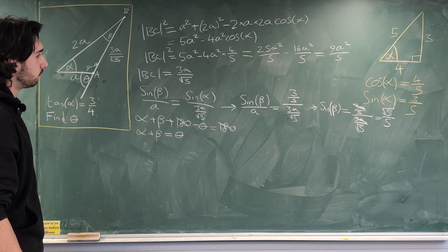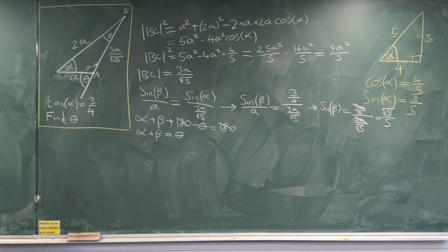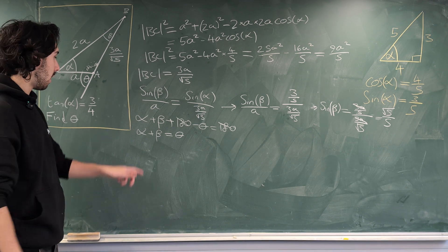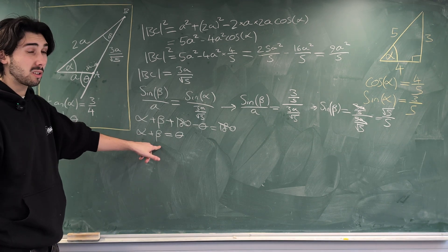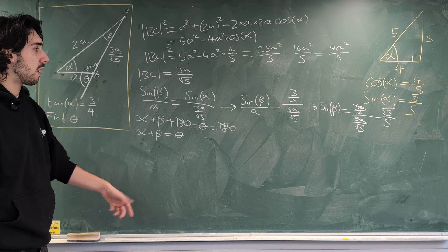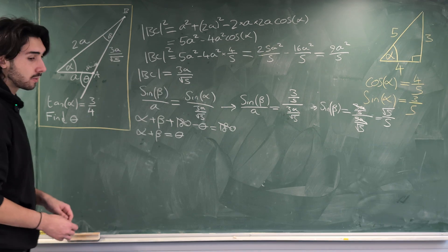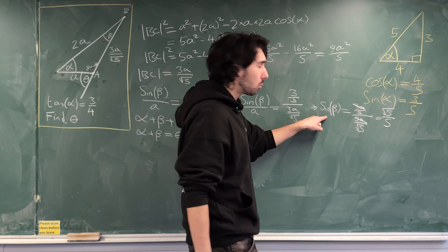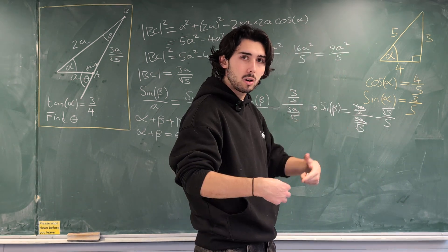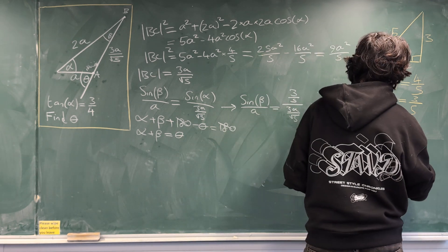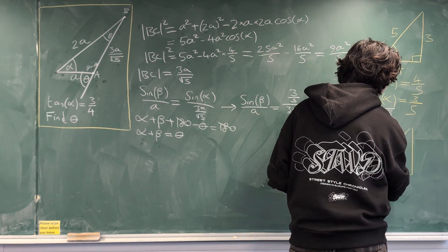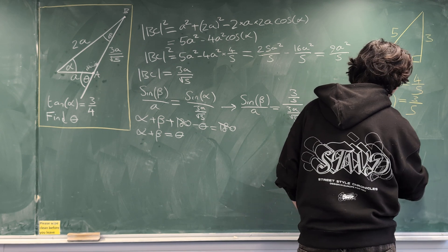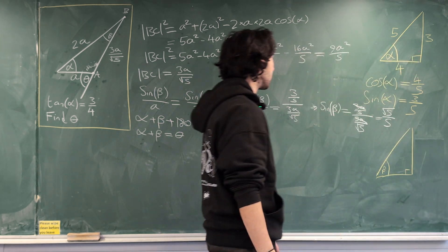Wouldn't it be nicer to write it as arctan of one thing? Why don't we draw another right-angle triangle, find what tan(beta) is, and then write it as arctan of that? So here's another right-angle triangle — this time to find the trig ratios for beta, rather than alpha.